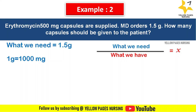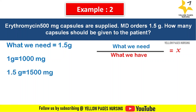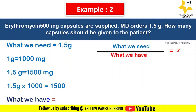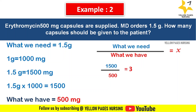1 gram equals 1000 milligrams, so 1.5 gram will be 1500 milligrams, obtained by multiplying by 1000. What we have is 500 milligrams — that is, one capsule of erythromycin contains 500 milligrams. Applying this into the formula, we get 1500 divided by 500, which equals 3. Hence we need 3 capsules to be given.